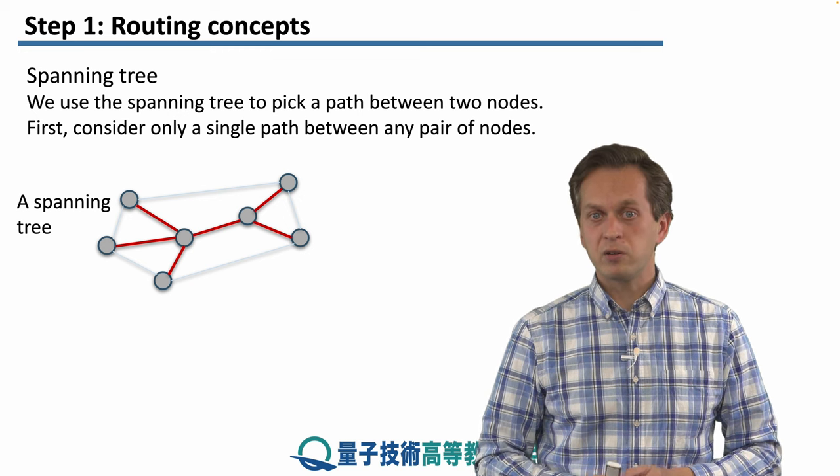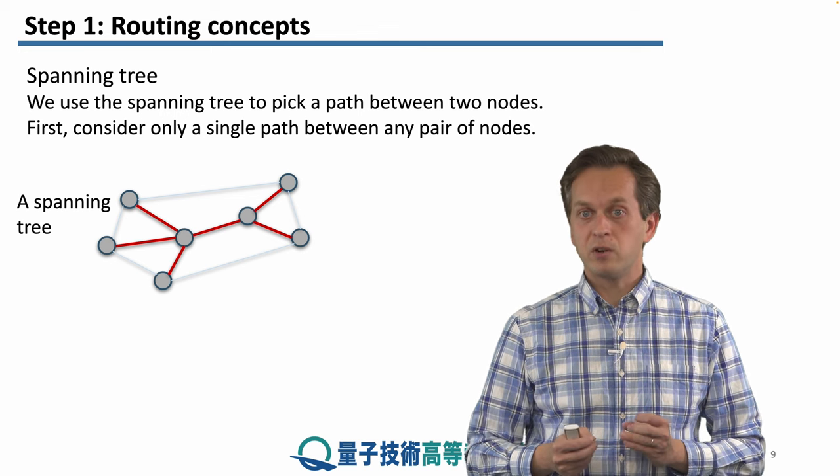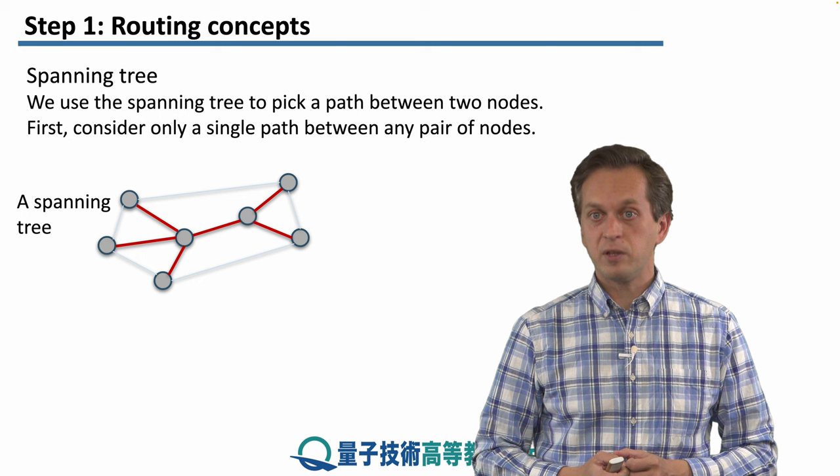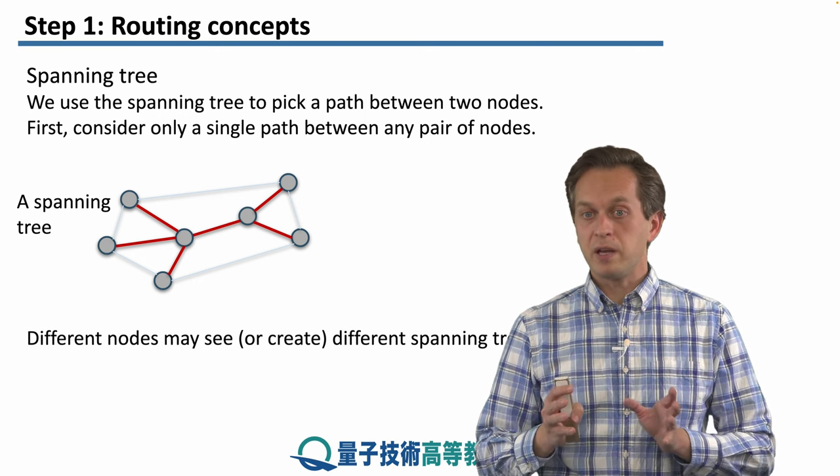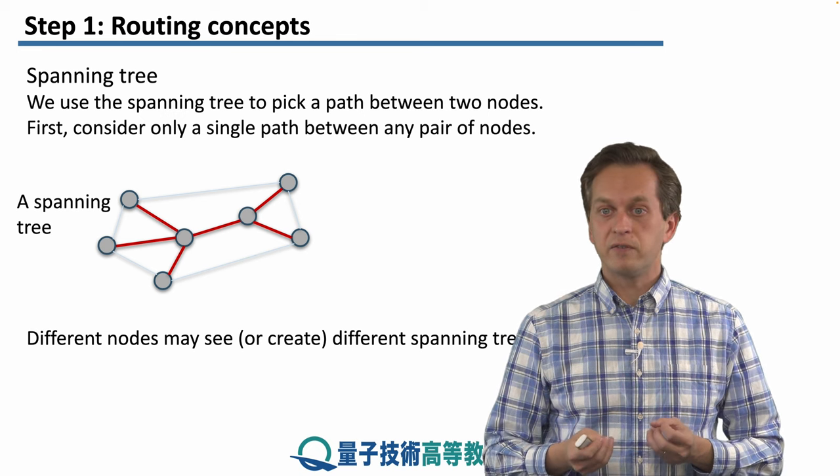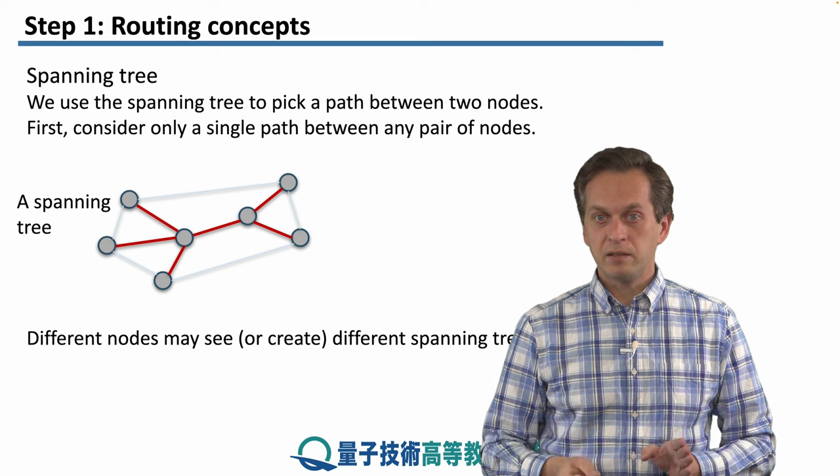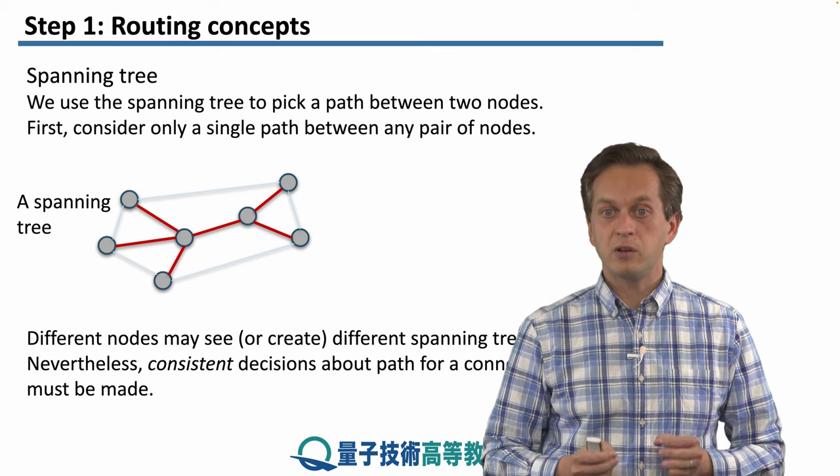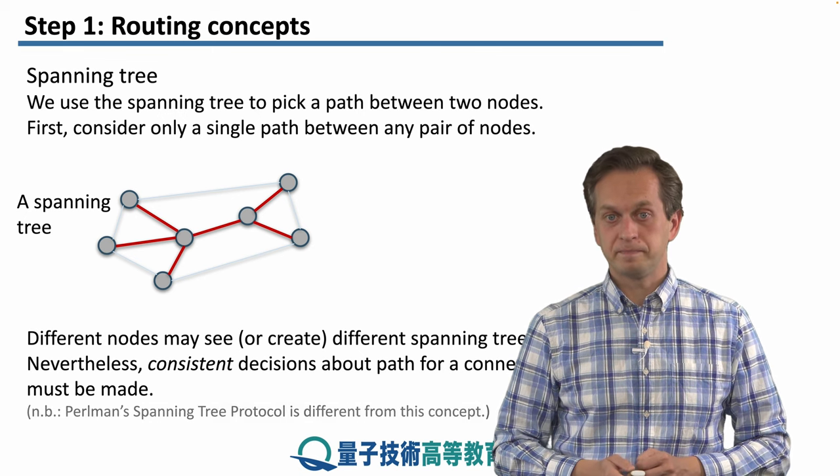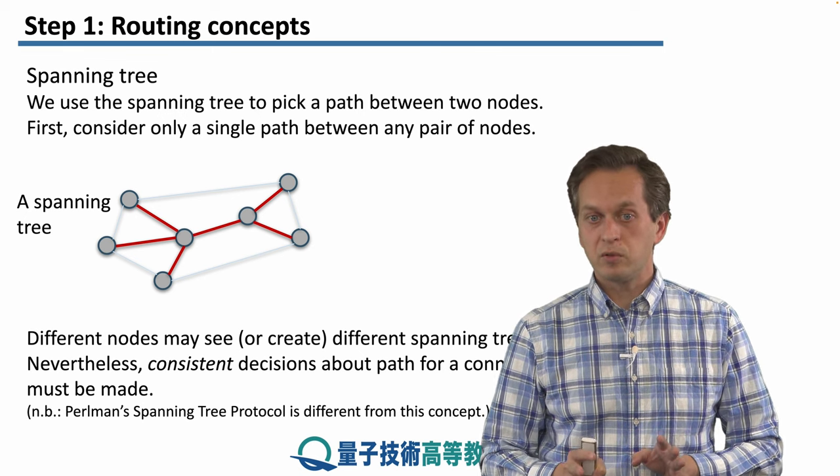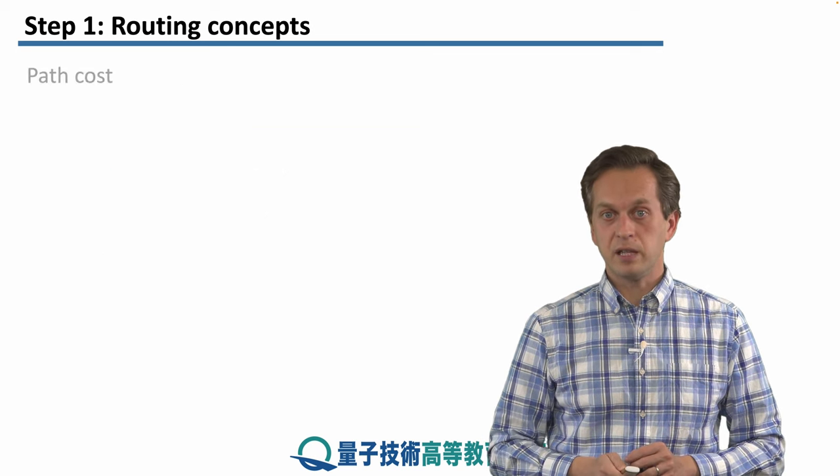Now, spanning tree is very important because it's used to pick a path between two nodes. First, we consider only a single path between any pair of nodes. Different nodes may have, may see, or may create different spanning trees. This is fine, but in the end what matters is that all nodes make consistent decisions about a common path. This is related to Perlman's spanning tree protocol, but we're not going to cover that in this lesson.